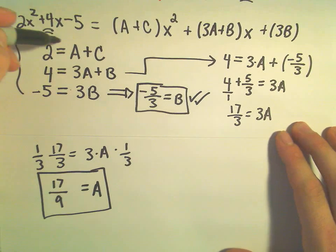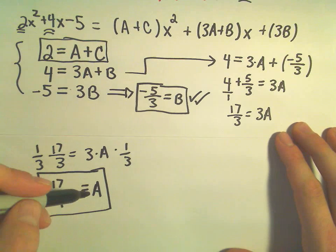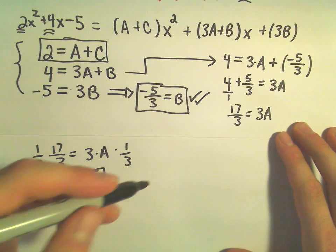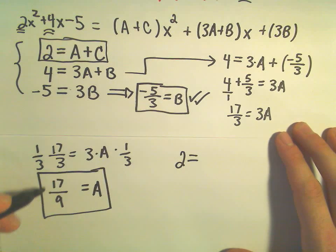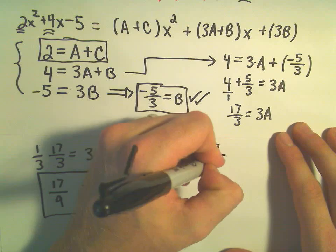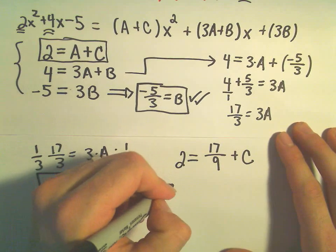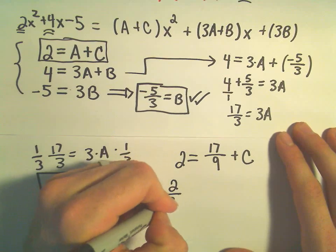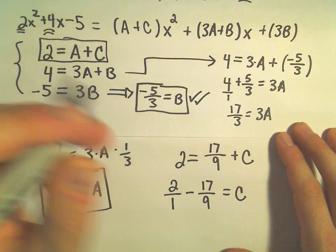And now I'm going to take our first equation, the fact that 2 has to equal A plus C. And I'm going to use this to solve for C. So it said 2 equals A plus C. But we know A is 17 over 9 plus C. So we've got 2 over 1 minus 17 over 9 equals positive C.